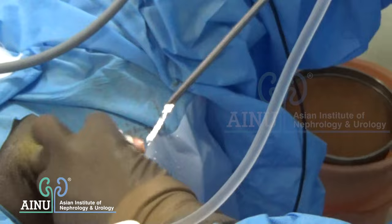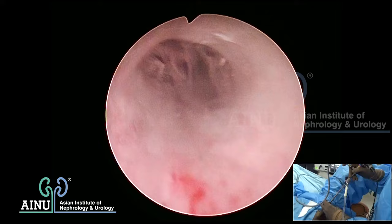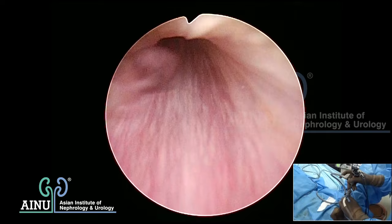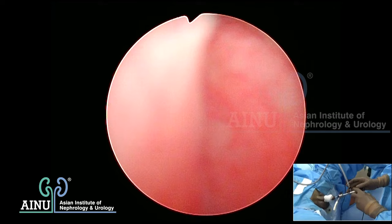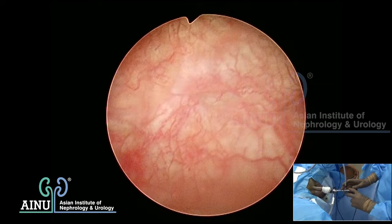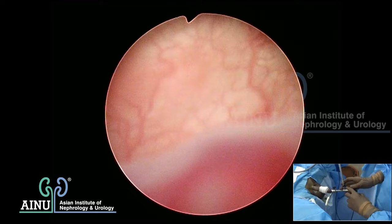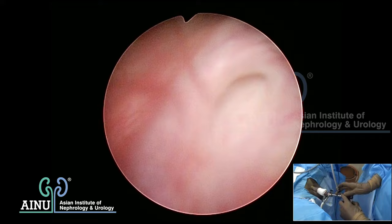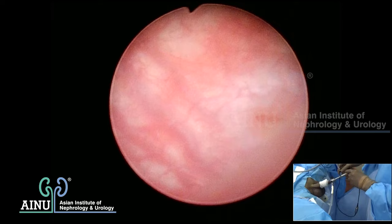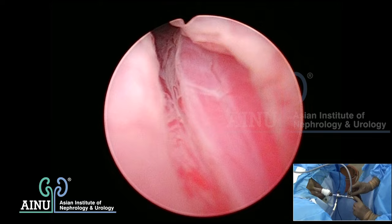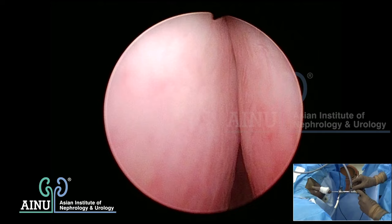Cystoscopy is being done. That's a normal penoscrotol junction, bulb, and that's a verumontanum. There's a large median lobe blocking - you suddenly enter a cavity and cannot see clearly. The ureteric orifices are visible - that's the left and right ureteric orifice. The median lobe is covering the trigone significantly. There are two lateral lobes touching in the middle with a little overlap.